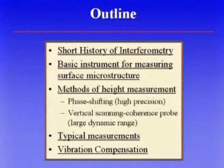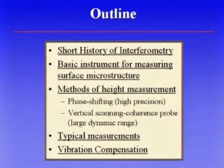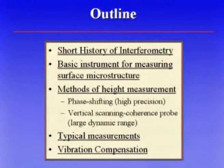I'm going to start out with a short history of interferometry, then talk about the basic instrument for measuring surface roughness. I'll cover two types of interferometric height measurements: phase shifting, which gives us very high precision, and the vertical scanning coherence probe technique, which gives us a large dynamic range. Together they can give us both high precision and large dynamic range. And then the last item is probably the biggest limitation of interferometry, which is set by the environment — vibration compensation — to open up the areas where interferometry can be used.